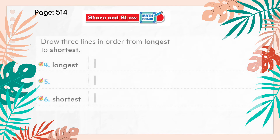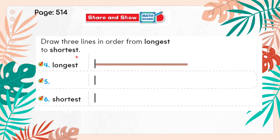On the same page, the next question asks you to draw three lines in order from longest to shortest. Draw the longest line first — the biggest line — then a somewhat shorter line in the middle, and finally the shortest line, which should be the smallest of all. The lines go from biggest down to smallest. Read the question carefully: if it says longest to shortest or shortest to longest, or if there are two objects using longer or shorter, read the terms carefully and draw accordingly.